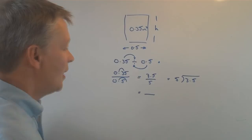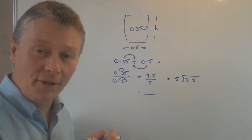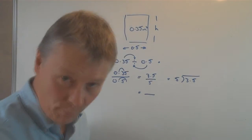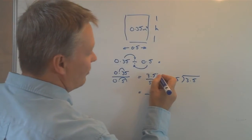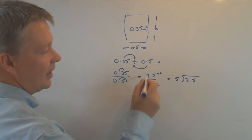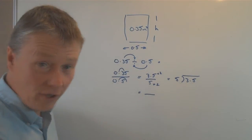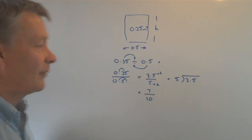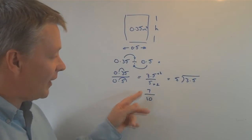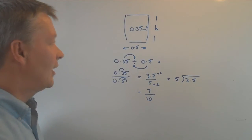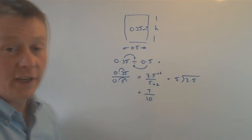But because I've multiplied it at the bottom by 2, I have to multiply it at the top by 2. So 3.5 times 2 there, and 5 times 2 there. 3.5 times 2 is 7, and 5 times 2 is 10. Brilliant! So as a fraction, that's my answer: 7 tenths.